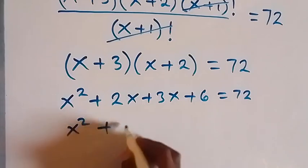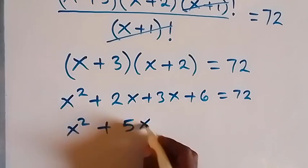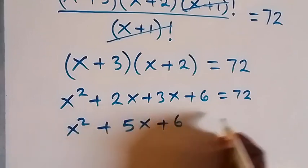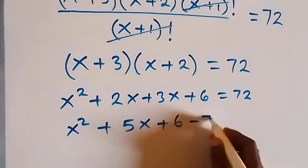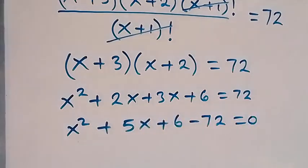be x squared plus 5x plus 6. Let's subtract 72 from both sides, so minus 72 equals zero